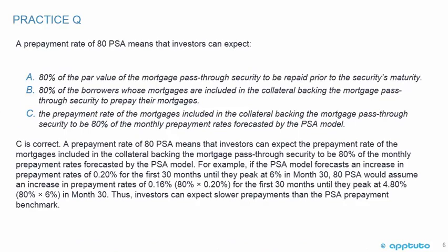C is correct. A prepayment rate of 80 PSA means that investors can expect the prepayment rate of the mortgages included in the collateral backing the mortgage pass-through security to be 80% of the monthly prepayment rates forecasted by the PSA model. For example, if the PSA model forecasts an increase in prepayment rates of 0.2% for the first 30 months until they peak at 6% in month 30, 80 PSA would assume an increase of 0.16% (80% × 0.2%) for the first 30 months until they peak at 4.8% (80% × 6%) in month 30.